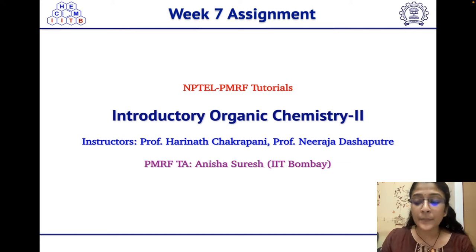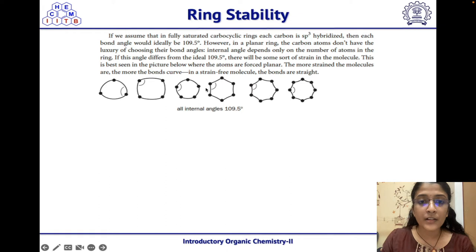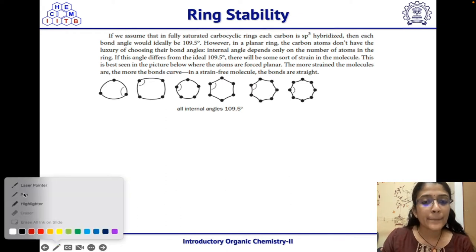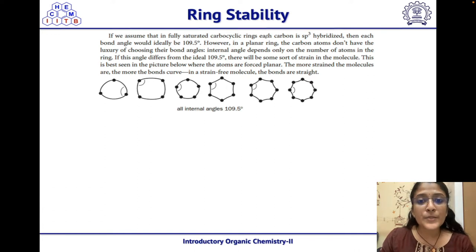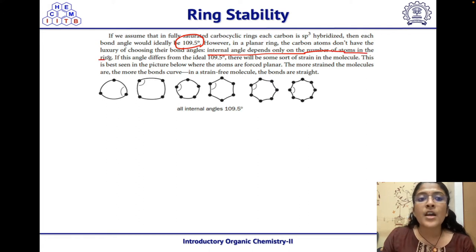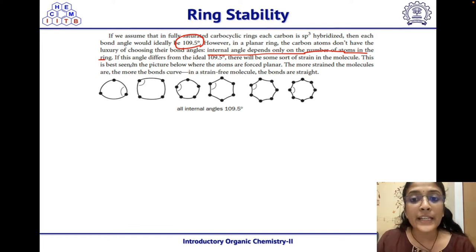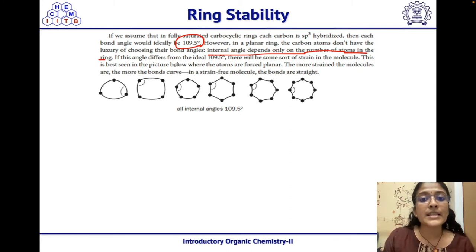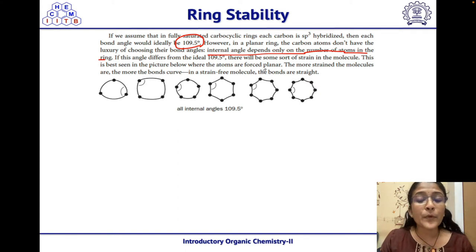Before going into the questions, I will clear the doubt regarding ring strain from the previous class. For fully saturated carbocyclic rings, each carbon is sp3 hybridized, so the ideal angle is 109.5 degrees — the tetrahedral angle. But in a planar ring, the carbon atoms don't have the luxury of choosing their bond angles; the internal angles depend only on the number of atoms in the ring. If the angle differs from 109.5 degrees, there will be some strain. The more strain, the more the bonds curve; in a strain-free molecule, the bonds are straight.